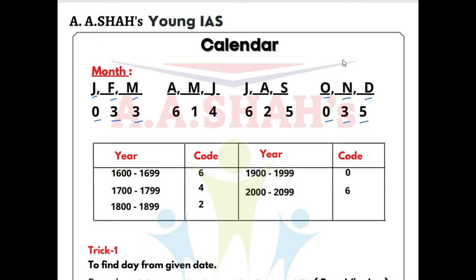Now for the middle 6 months: April, May, June have codes 6, 1, 4. And July, August, September have codes 6, 2, 5. So April=6, May=1, June=4, and July=6, August=2, September=5.